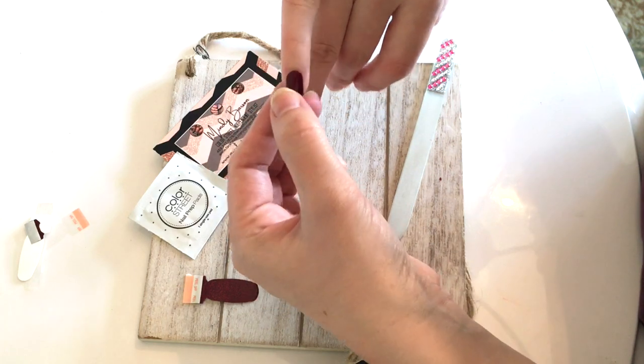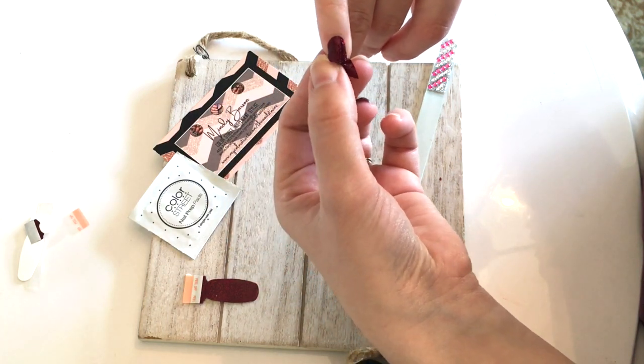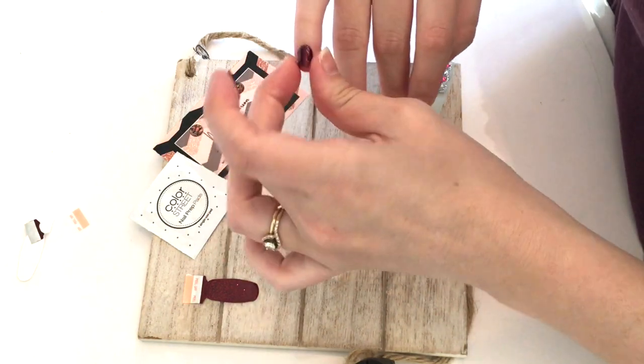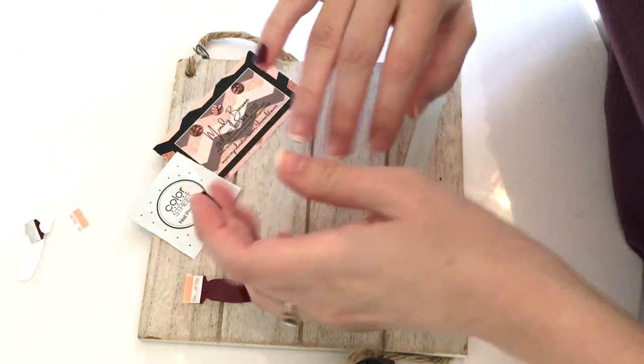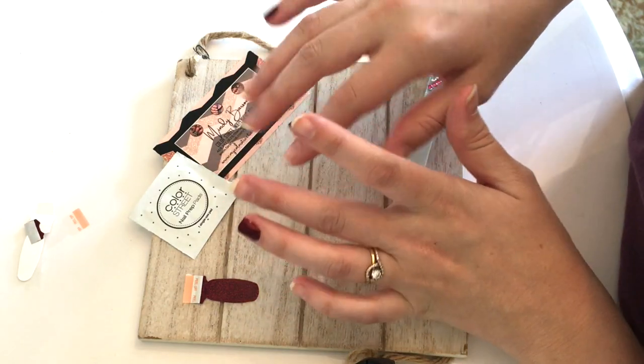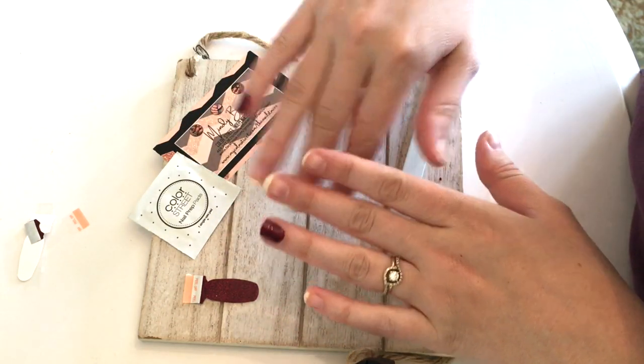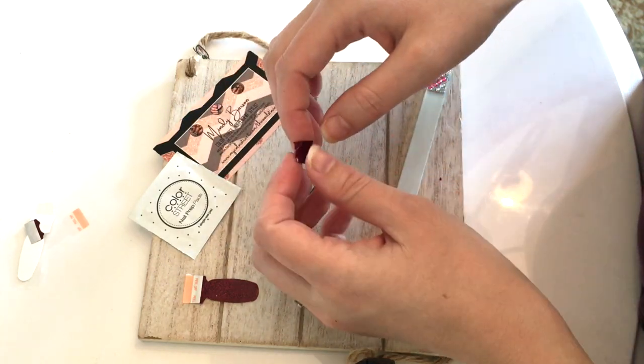Typically these accent nails are just to sample and see how long they last on your fingers. What a lot of ladies like to do, and what I did originally, is just the other fingers that you don't have a nail strip for, just put nail polish on and you can compare and see how long they last.